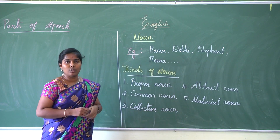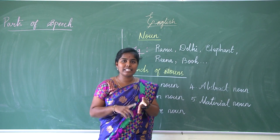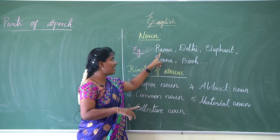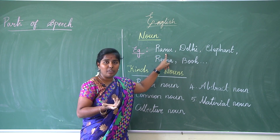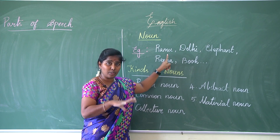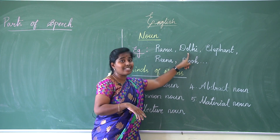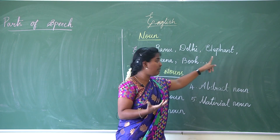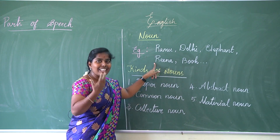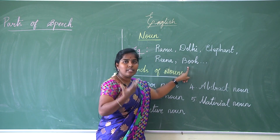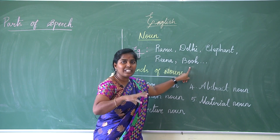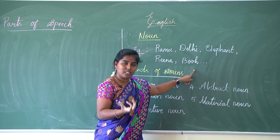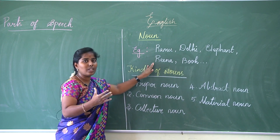What is meant by noun? Noun is a naming word of a person, place, animal and thing. For example, Ramu is a name of a person. Delhi is a name for a place. Elephant is a name for an animal. Reena is again a name of a person. And book — we give a name for things, so book comes under the category of thing. These are the examples known as noun.